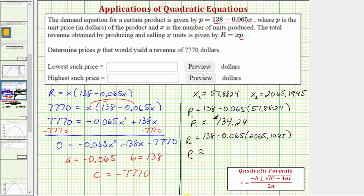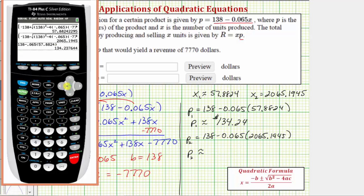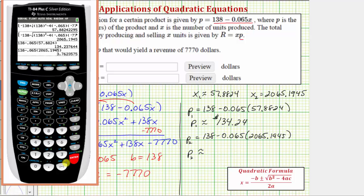And now we'll find p sub two. So again if we press second enter, we can just edit the entry here in parentheses, which for p sub two is 2065.1945. So p sub two is $3.76.